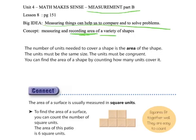What is area? Area is the number of units needed to cover a shape. The units must be the same size and the units must be congruent. Congruent is the same. You can find the area of a shape by counting how many units cover it.